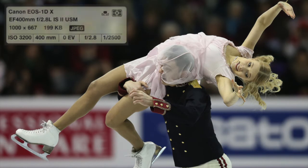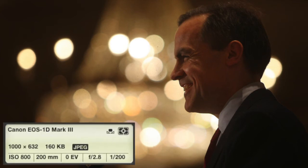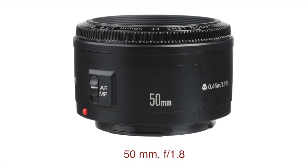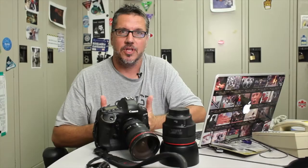Once you get comfortable with depth of field, you can start looking for backgrounds that will give you a little creative edge. Lights in the background shot with a shallow depth of field become large blurry orbs, which are very nice in a portrait. If you don't have the pennies to get one of these kinds of lenses, a great lens would be a 50mm f/1.8 — very cheap and it will give you that full effect of shooting with a shallow, shallow depth of field.